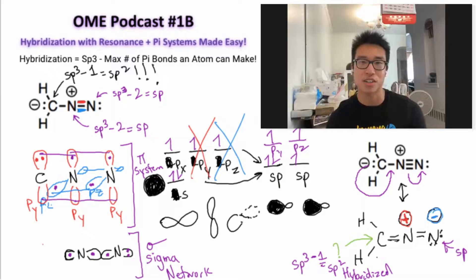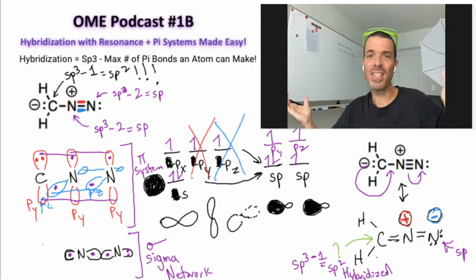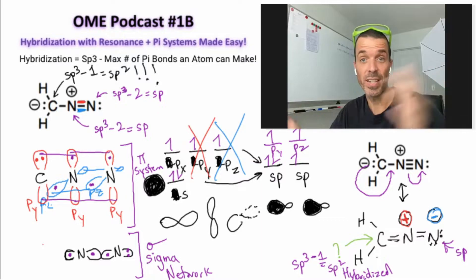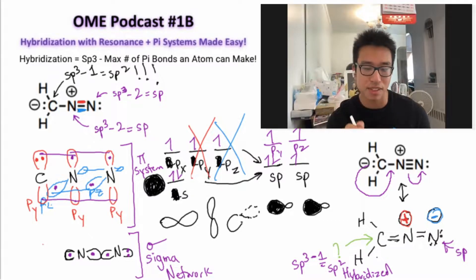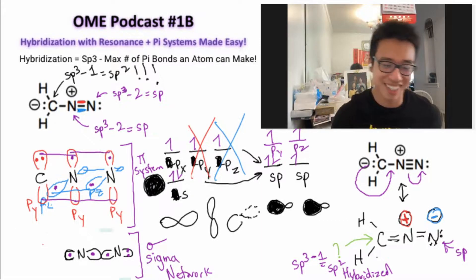And there you go. You just conquered your exam question. Easy peasy, lemon squeezy. JK, we saw the Sigma network.